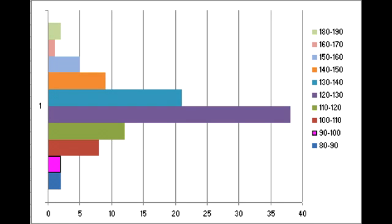First we're going to discuss the different BPMs we found in our 100 electronic and 100 rock songs. For me, the most common BPM was 120–130 BPM, which is about this fast. Then the second most common was 130–140, and these two types of BPMs are very common because you can really dance to them. And 130–140 is popular because pretty much all dubstep music — which is a slower, more aggressive, electro kind of music — has this tempo.